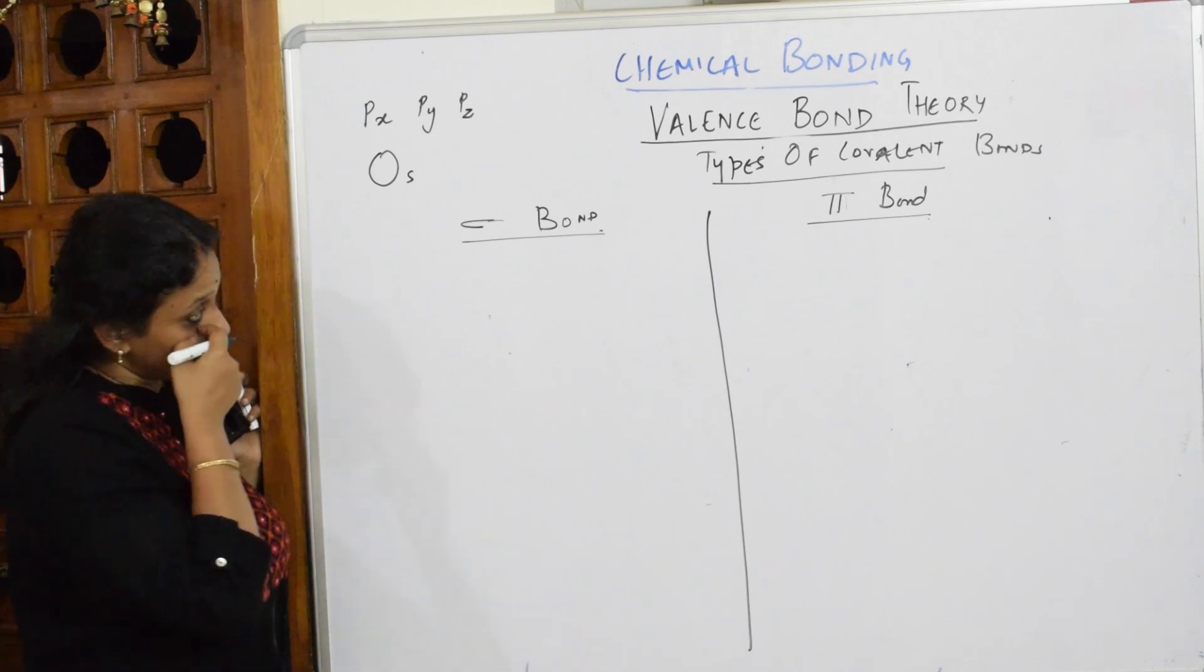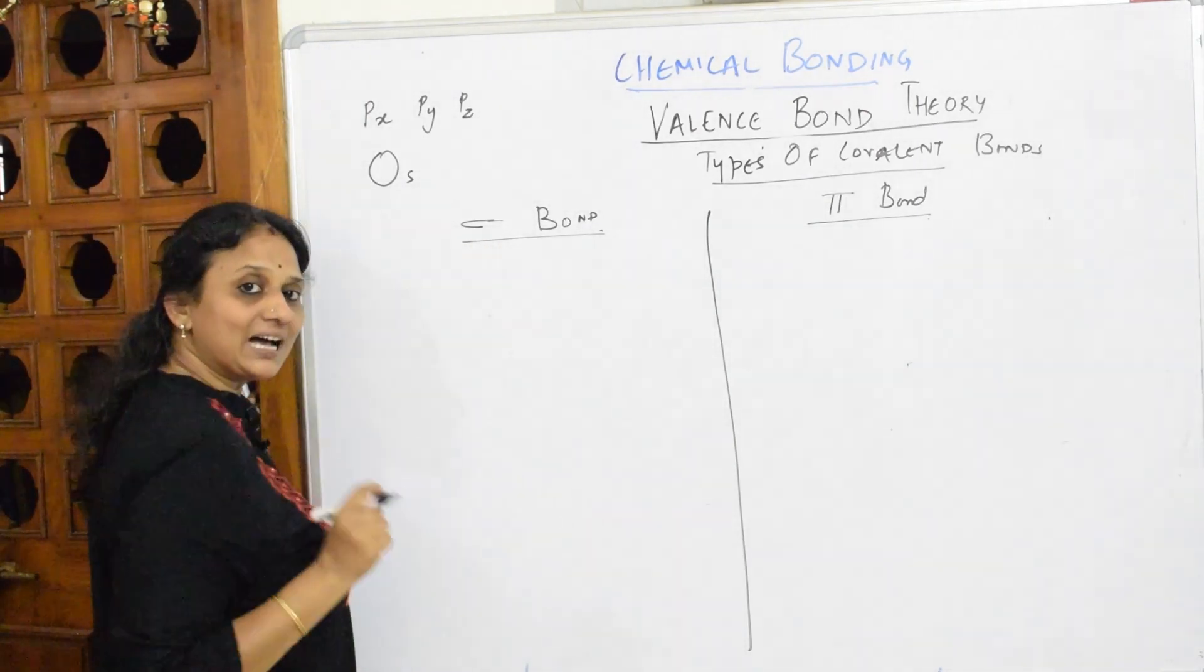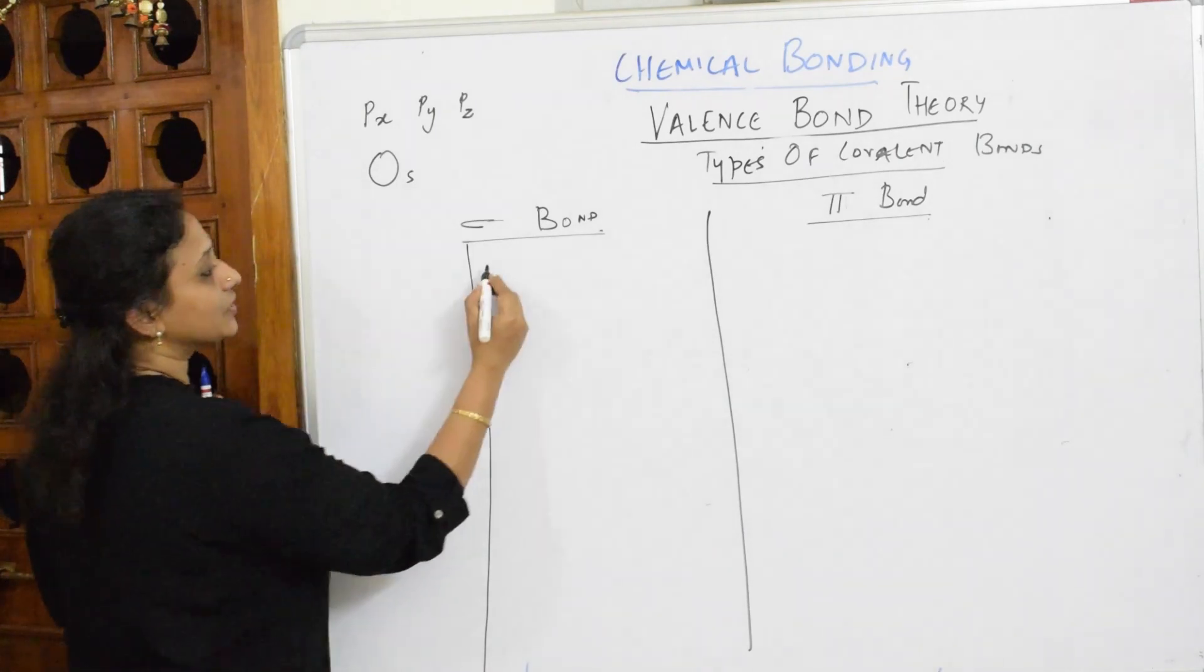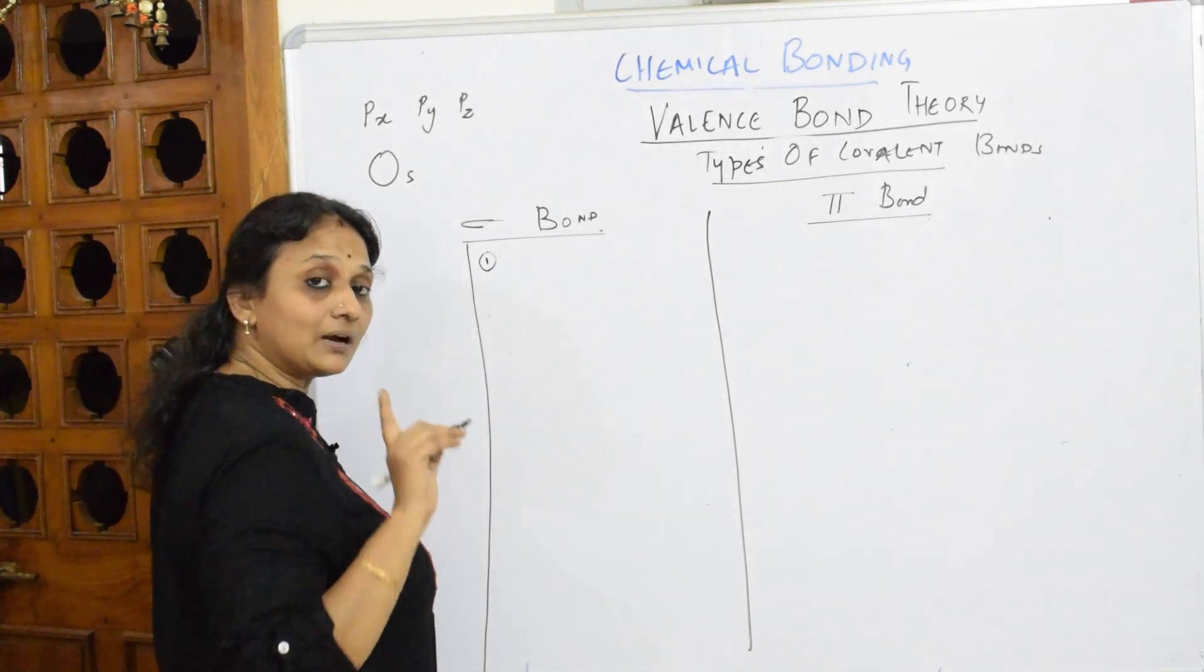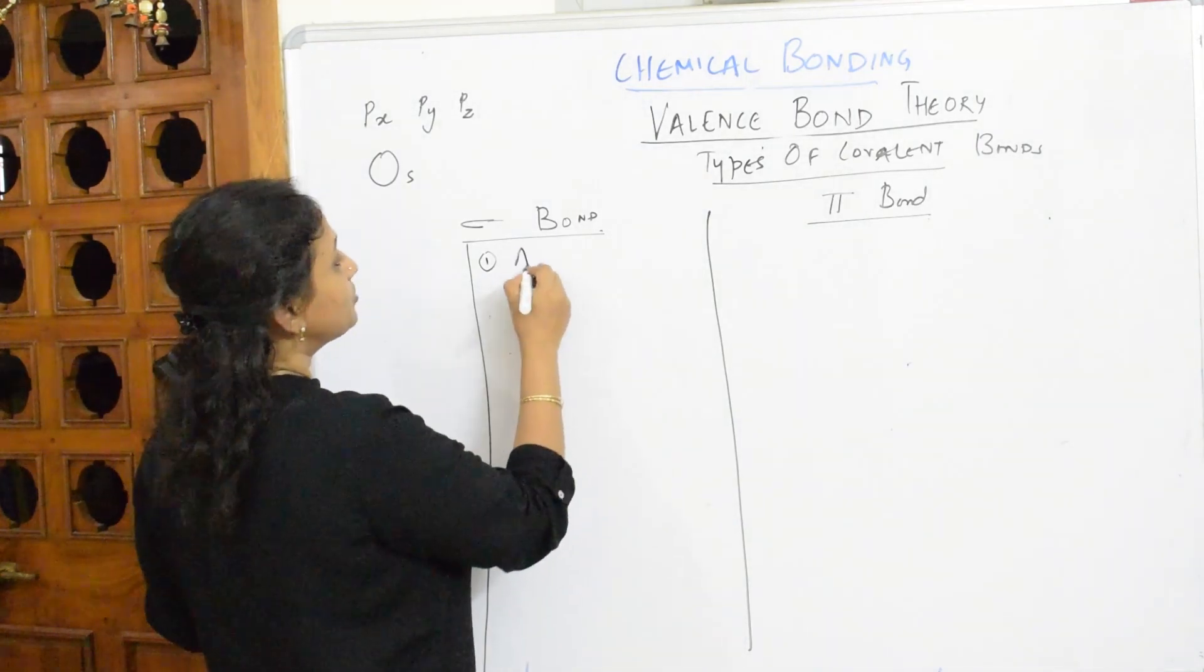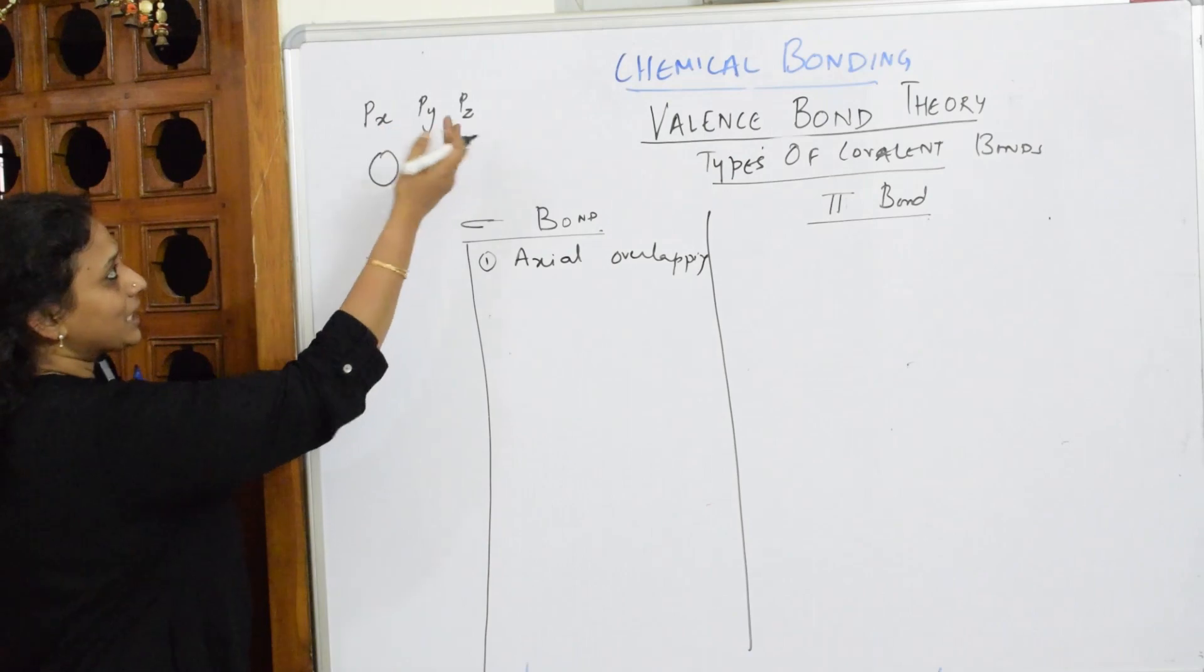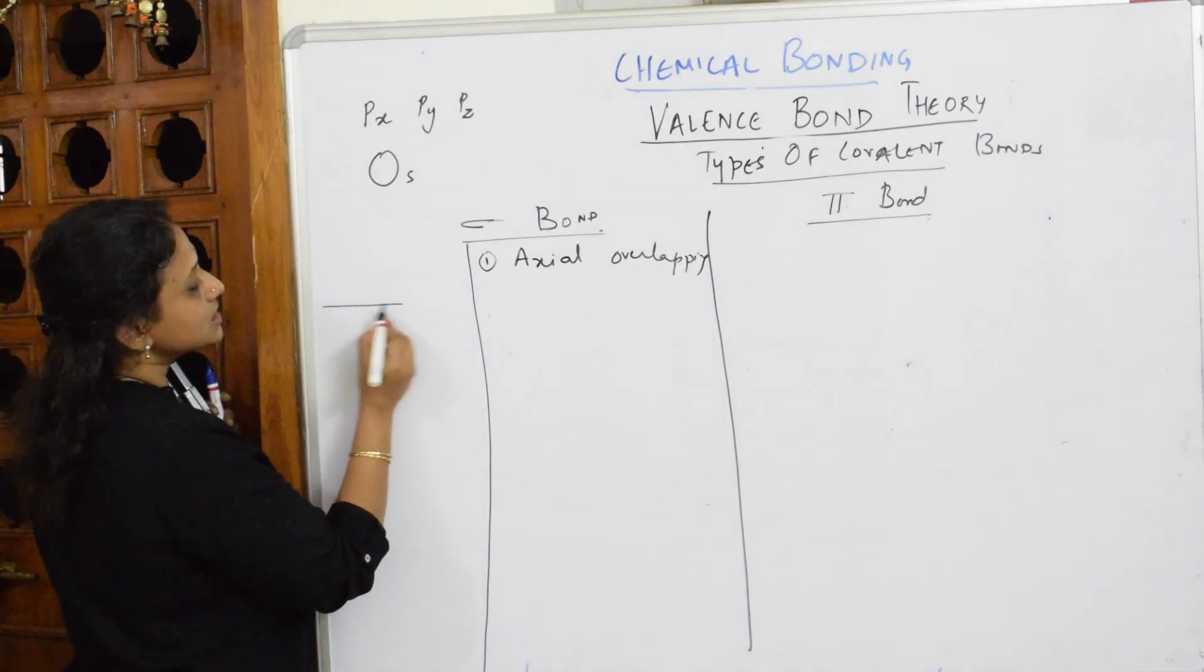In case of sigma bond, when a sigma bond has to form, how is the condition? For a sigma bond to form, first important thing, the orbitals have to overlap axially along the internuclear axis. So they should be axial overlapping. What is this axial overlapping? Just see. Let me pick up anything.